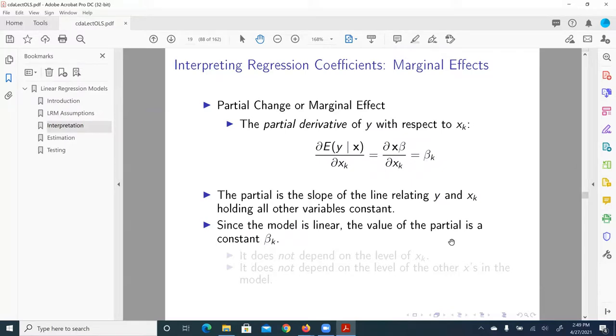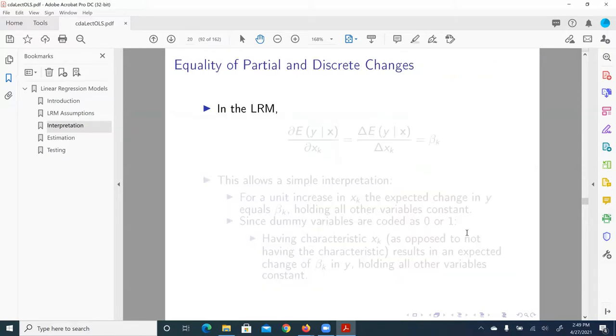Since the model is linear, the value of the partial is a constant beta_k. So again, it doesn't matter the values of any of the predictors. It does not depend on the level of x_k, the generic variable x_k, or the slope that corresponds to x_k. And it does not depend on value of other x_k axes in the model. So that's very nice. And also, if you pay attention to the last couple of slides, you would notice that in the linear regression model or the classical OLS regression, the partial here is equivalent of discrete change is equal to the slope corresponding to the slope for its corresponding x variable predictors.